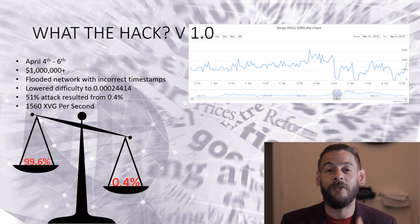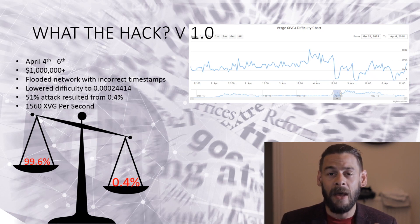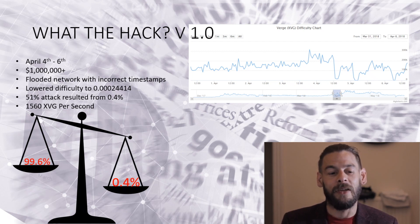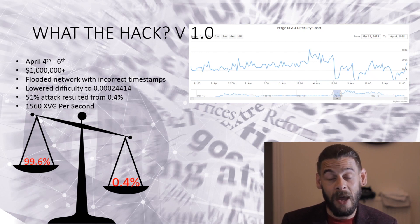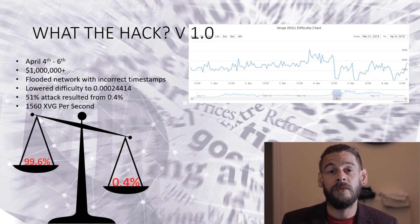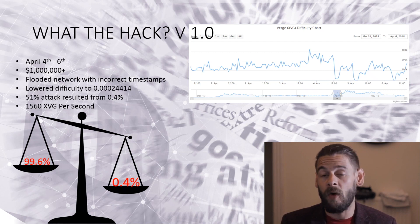Although this was a 51% attack, it was done slightly differently — they flooded the network with incorrect timestamps from an hour previous. This meant the Dark Gravity Wave algorithm was reading timestamps from an hour ago, leading it to believe that the mining difficulty was set too high. So it reduced that difficulty from as high as 300,000 to as low as 0.0002 — a huge decrease. This attack was carried out with as little as 0.4% of the entire hash rate of the network, using just one algorithm — Scrypt — the cheapest algorithm to take control of. Because the difficulty was reduced so dramatically, they managed to create 1,560 Verge tokens per second, resulting in a hack worth over a million dollars.